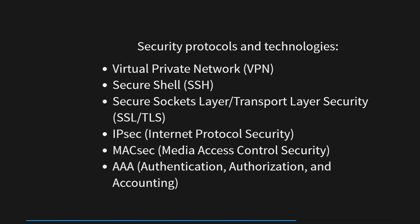IPsec (Internet Protocol Security) enhances data protection at the IP layer, securing data exchange between network devices over an IP network. MACsec (Media Access Control Security) provides wired network connections with point-to-point encryption, ensuring data security at the data link layer. Additionally, AAA — authentication, authorization, and accounting services — regulate user access to network resources effectively. Authentication verifies user identity, authorization determines resource accessibility, and accounting tracks resource usage for auditing purposes, collectively enhancing the organization's security infrastructure.